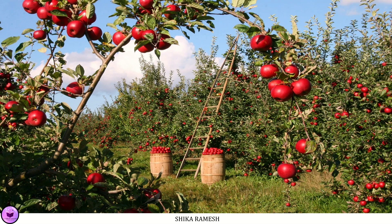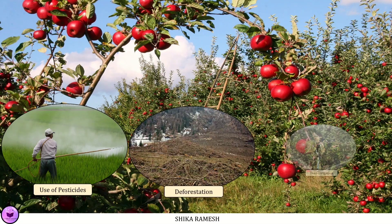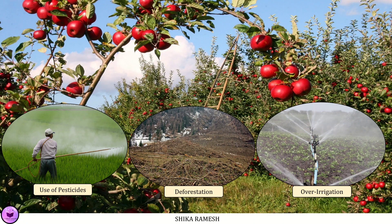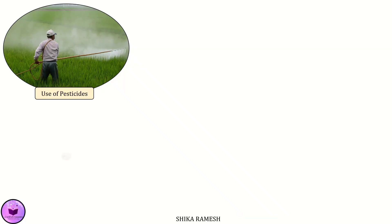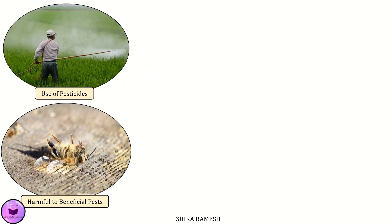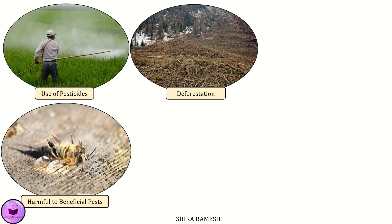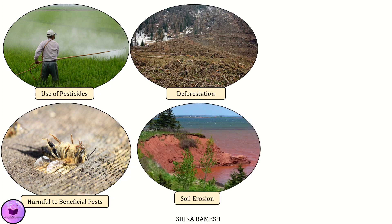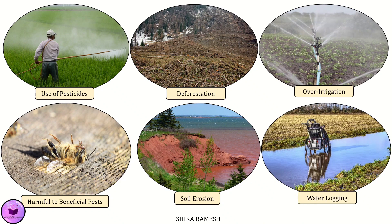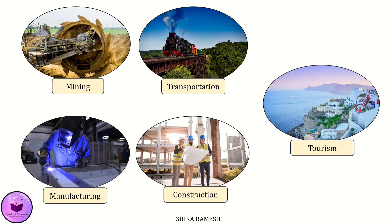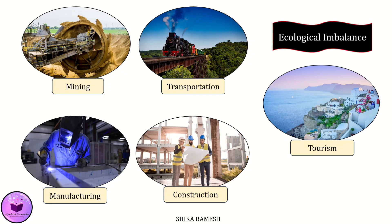For instance, agriculture is essential for food security. However, unsustainable farming practices such as the use of pesticides, deforestation, and over-irrigation can cause ecological issues. The use of pesticides and other chemicals can lead to soil degradation, water pollution and harm beneficial insects. Deforestation for farming can lead to climate risk, soil erosion, and biodiversity loss, while over-irrigation can lead to water logging and depletion of local water resources. Similarly, mining, manufacturing, transportation, construction, and tourism are economic activities that create ecological imbalance.